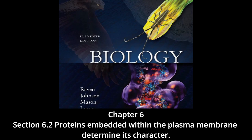Membrane sections assemble in the endoplasmic reticulum, transfer to the Golgi complex, then are transported to the plasma membrane. The endoplasmic reticulum adds chains of sugar molecules to membrane proteins and lipids, creating a sugar coating called the glycocalyx on the outside of the cell. Different cell types exhibit different glycoproteins and glycolipids on their surfaces, which act as cell identity markers.